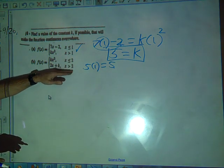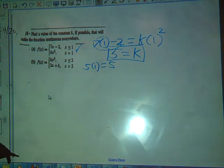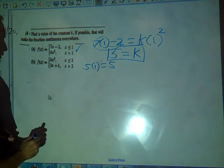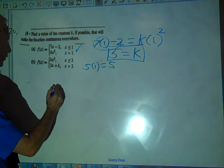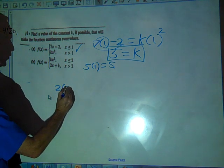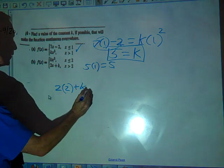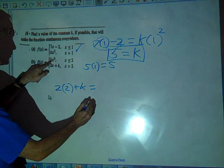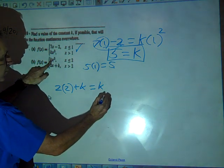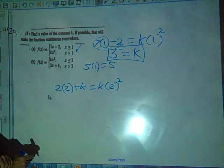Let's go ahead and look at part B. What's our point of change here? 2. So how are we going to set these up? Okay, we're going to set in 2 times 2 for x, right? 4 plus k equals k times 2 squared. Is that right? It is.